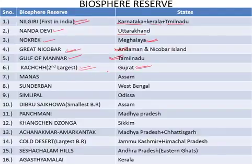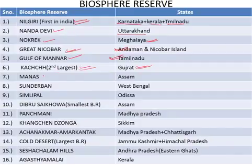Sixth is the Kutch Biosphere Reserve in the state of Gujarat. It is important to note that Kutch is the second largest Biosphere Reserve in India. Seventh is the Manas Biosphere Reserve in the state of Assam. Next is the Sundarbans Biosphere Reserve in the state of West Bengal.